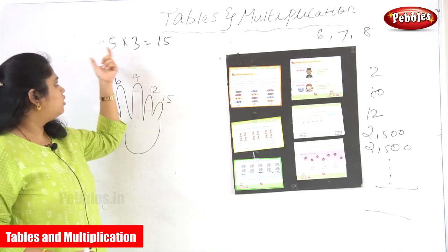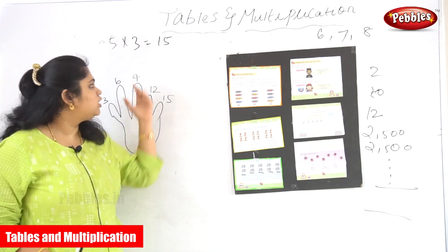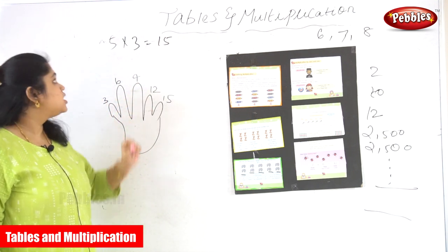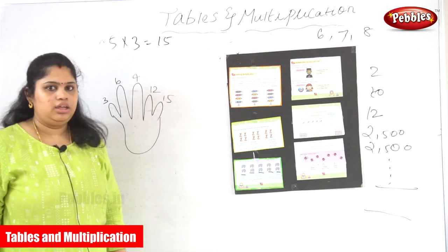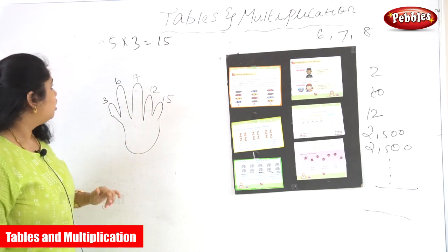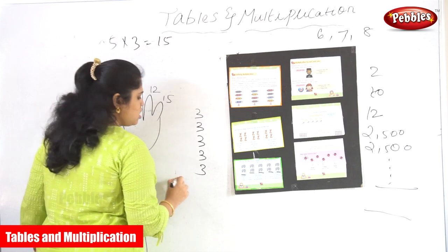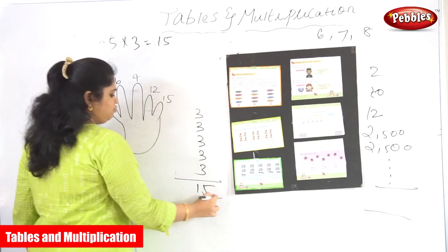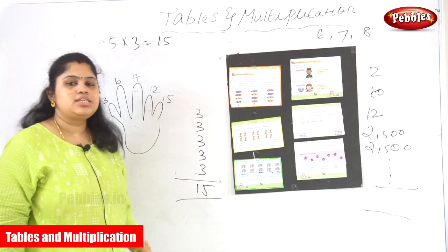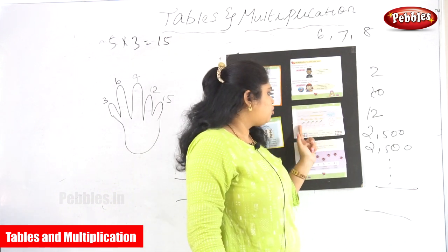How many 5 threes? The value of 5 threes is 15. In 5 groups, how many 3s — 15. Five 3s means 3+3+3+3+3 = 15. So instead of repeating this addition, we just use multiplication. Multiplication is the easiest form. This is what the table is telling us.